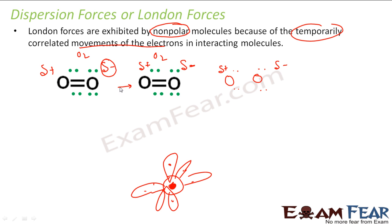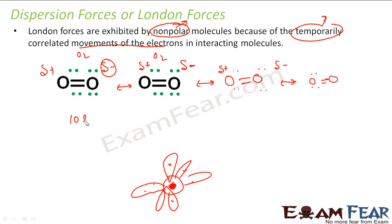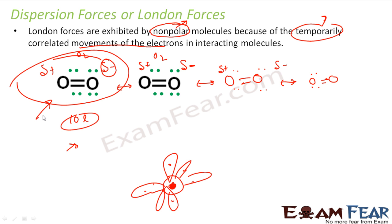There is then a force of attraction between them, and this force of attraction is nothing but the London or dispersion force. It happens in non-polar molecules and is temporary. But it keeps happening — there are billions of molecules in a glass of water, and at any given point, a large number of molecules are always impacted by London force, which is why it has importance.